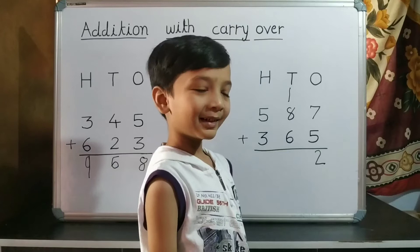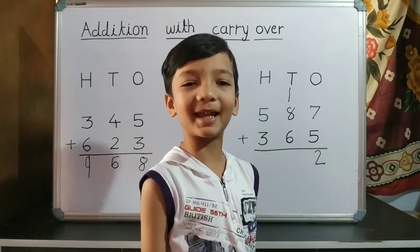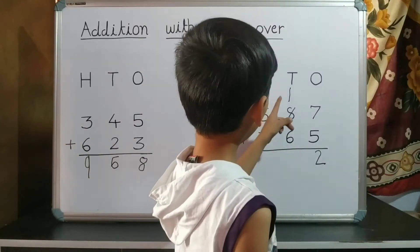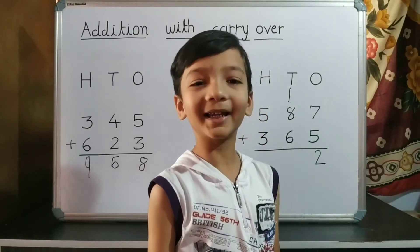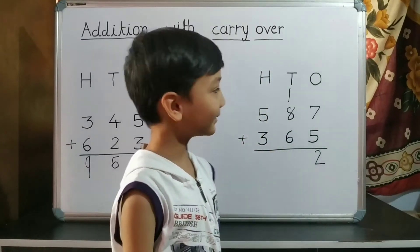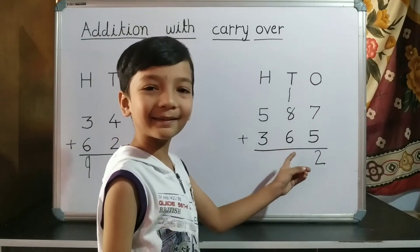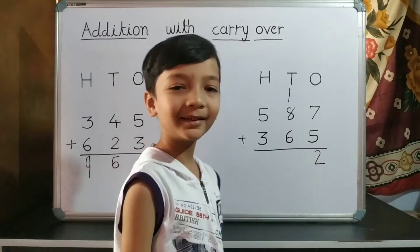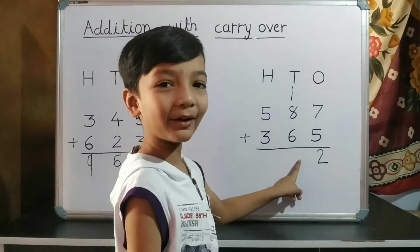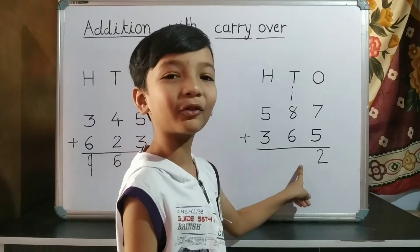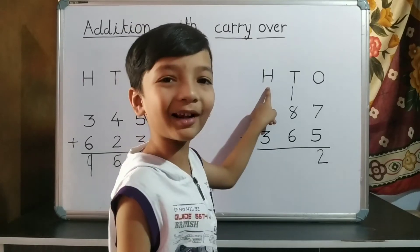Now we do addition of ten's place. 1 plus 8 is 9. 9 plus 6 is 15. So we write 5 on ten's place and 1 carryover to hundred's place.